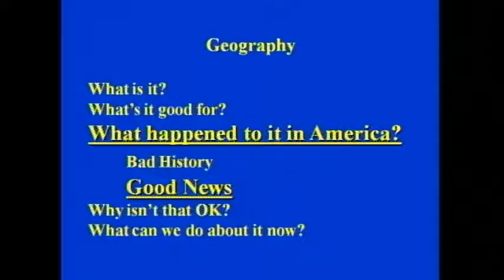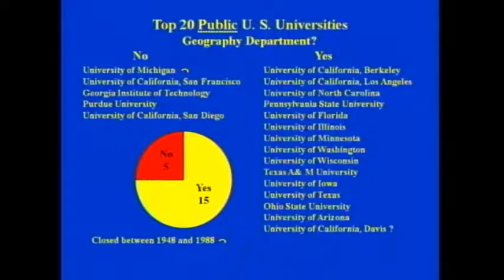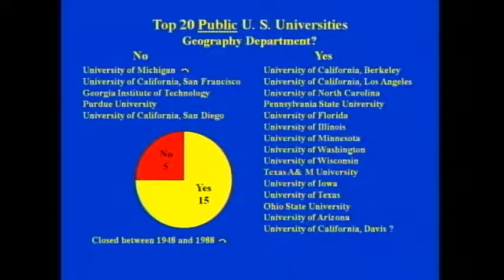But let's look at the good news. Of the top 20 public U.S. universities, there are still 15 geography departments, though one — UC Davis — is now a program rather than a department. But 14 or 15 geography departments that are still strong and booming are creating a foundation from which we could rebuild geography if the opportunity is given us.